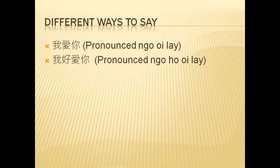I am going to teach you two ways to say it. They're very similar to each other — they just have very subtle differences in meaning. The first one is 我愛你. This is basically a direct translation of 'I love you,' where 我 is 'I,' 愛 is 'love,' and 你 is 'you.'